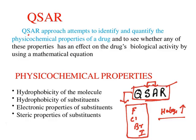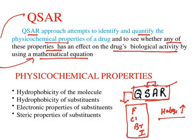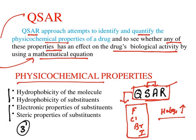QSAR attempts to identify and quantify the physical chemical properties of a drug, to see whether any of these properties have an effect on its biological activity using a mathematical equation. The physical chemical properties explored are hydrophobic parameters, electronic parameters, and steric parameters — these three are considered because evaluating them is possible and easier.